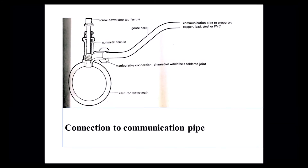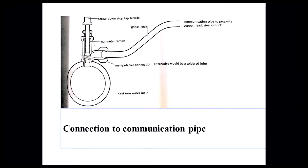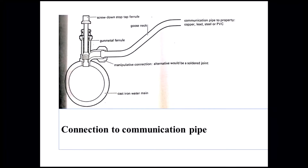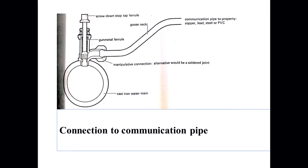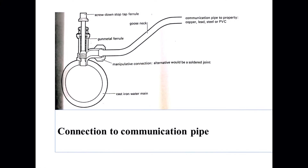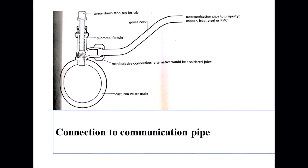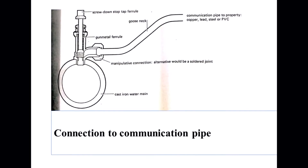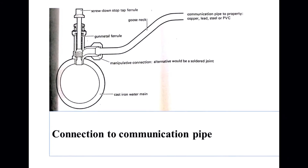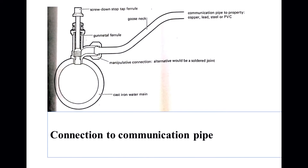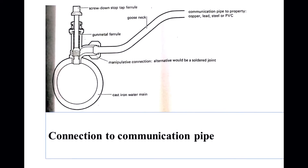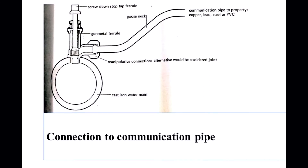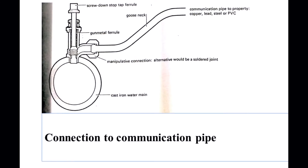You connect the ferrule to the main, then connect the communication pipe going towards the service pipe. Where the water meter stops, that is where WASAC's responsibility stops. From the water meter, the owner of the house continues with the service pipe up to the storage tank, or if using a direct system, water goes directly to all appliances in the house.